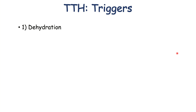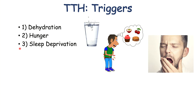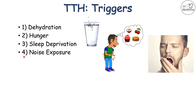One trigger that causes these headaches is dehydration — water deprivation is known to trigger them in many individuals. Hunger is another important trigger. Sleep deprivation is also a big trigger. This is why we can see these headaches occurring more frequently in the evening hours and in patients who have insomnia. Sleep deprivation induced tension type headaches may be due to autonomic nervous system dysfunction. Some patients may have these headaches after being exposed to certain sounds, and anxiety and stress are also big triggers.